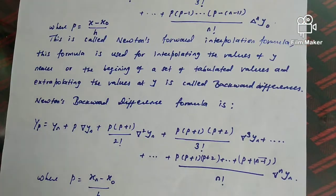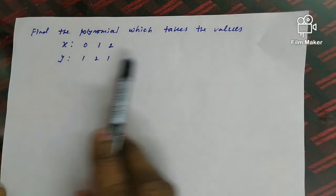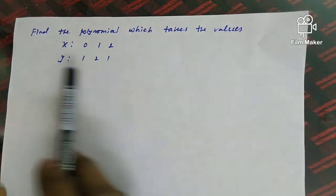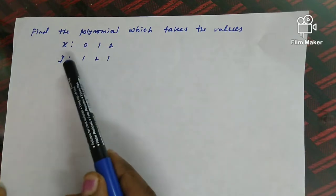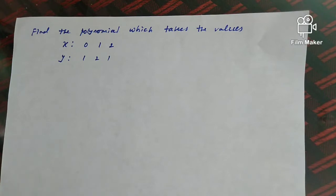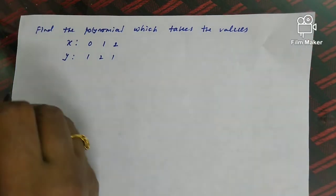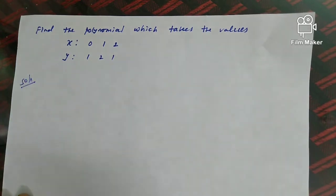Now we will look at the first problem. Find the polynomial which takes the values: x = 0, 1, 2 and y = 1, 2, 1. From the given data, the first step is to form the difference table.